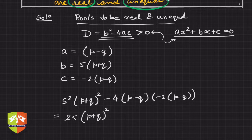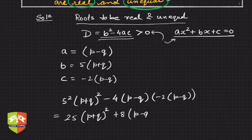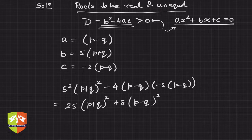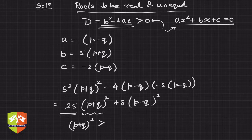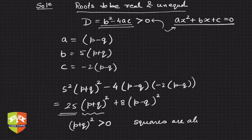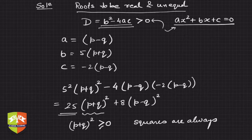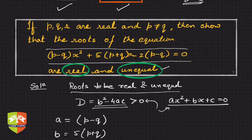I am purposefully not opening the brackets. The second term gives us 8(p-q)², so D = 25(p+q)² + 8(p-q)². Now, 25 is a positive quantity, and any square is always greater than or equal to 0. But since p is not equal to q, we need to be careful here.